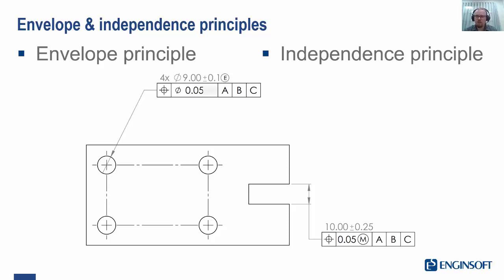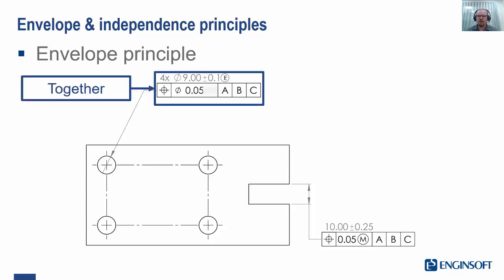The envelope principle means that the GD&T, what's in the feature control frame, and the size tolerance are linked. This is specified with the little E symbol there. And they are taken together.